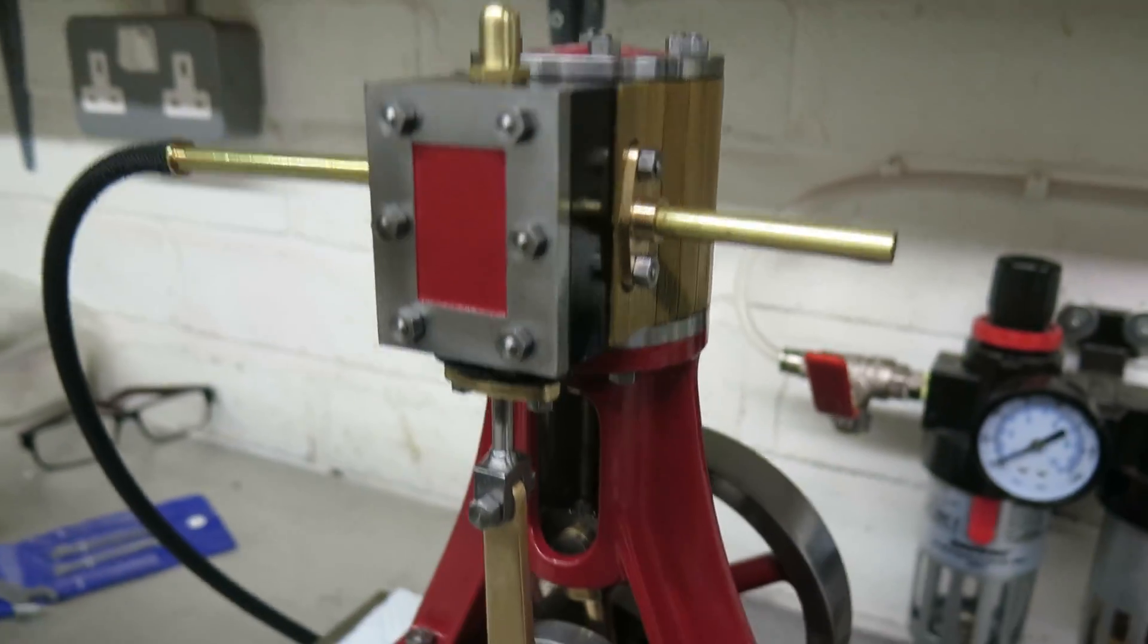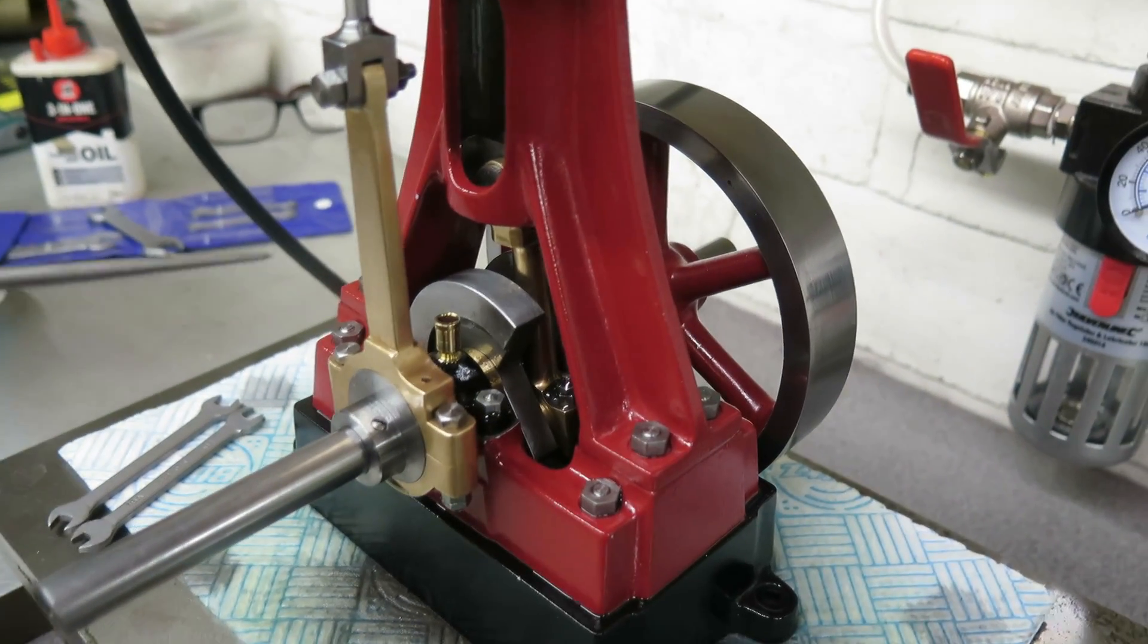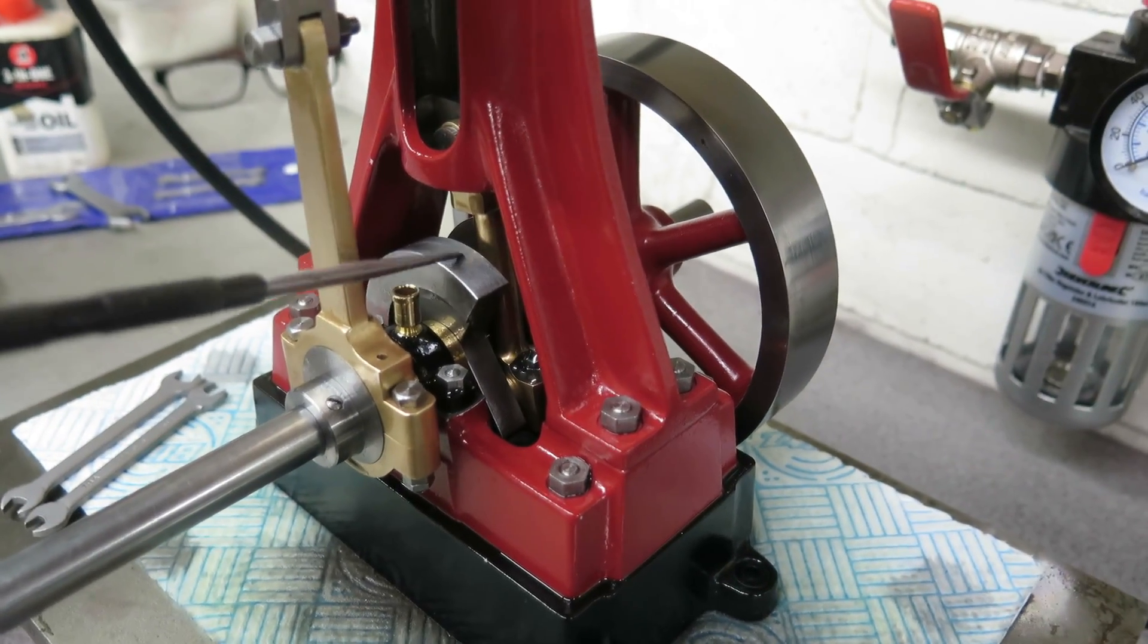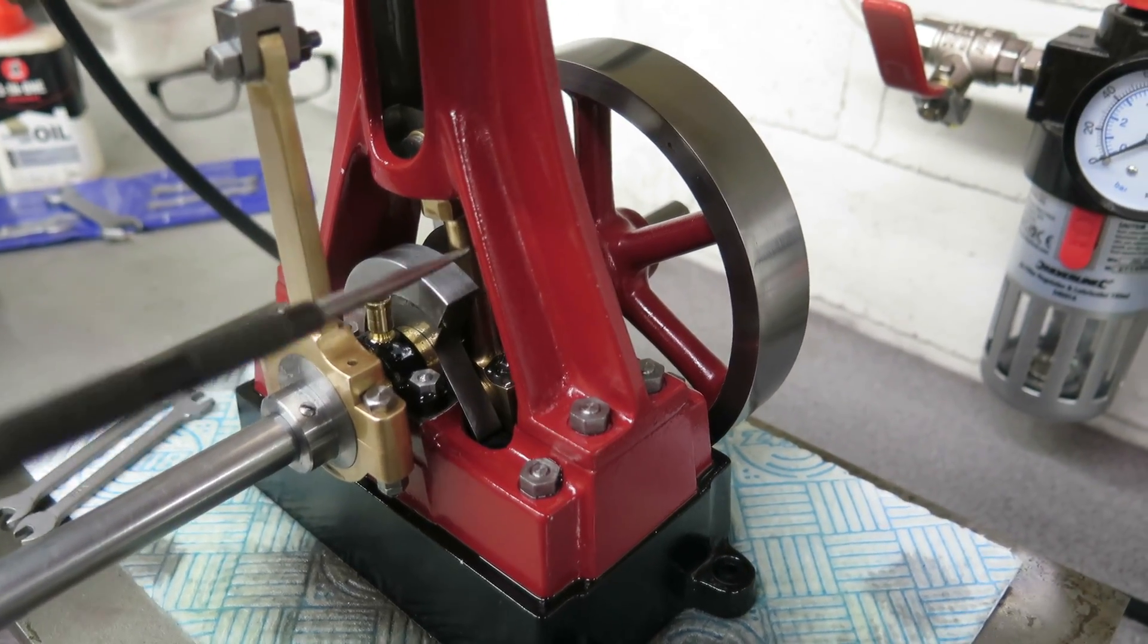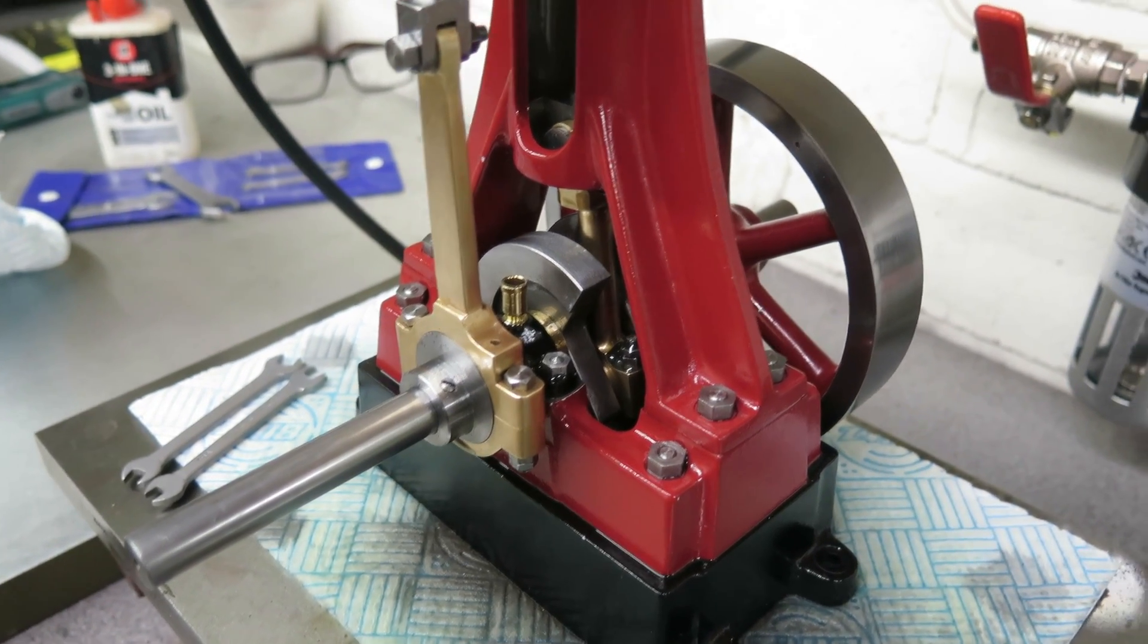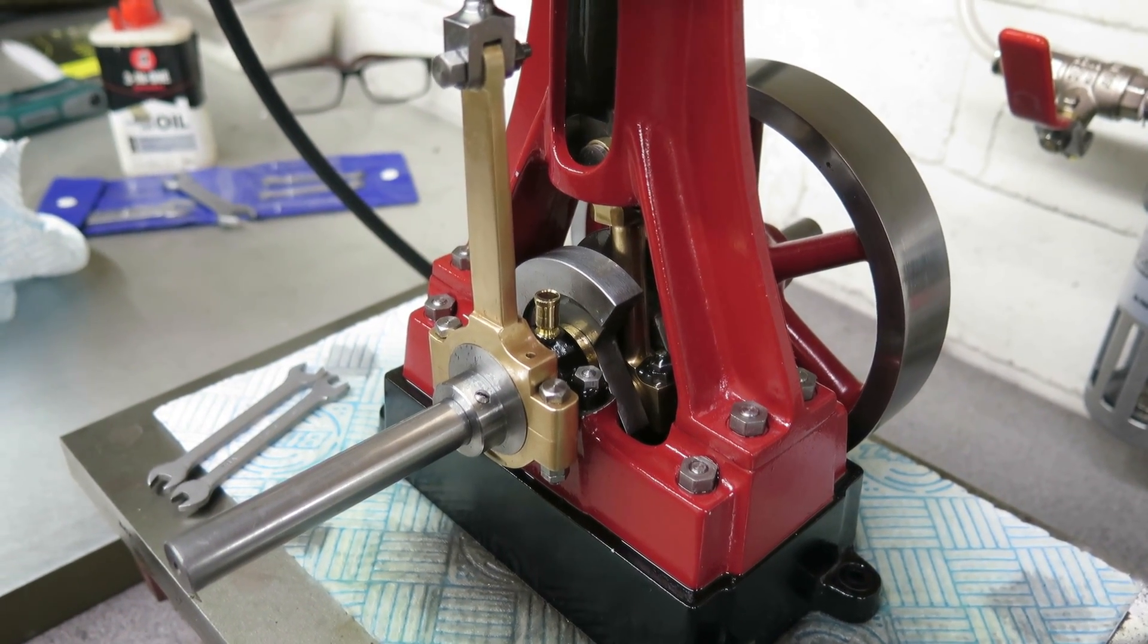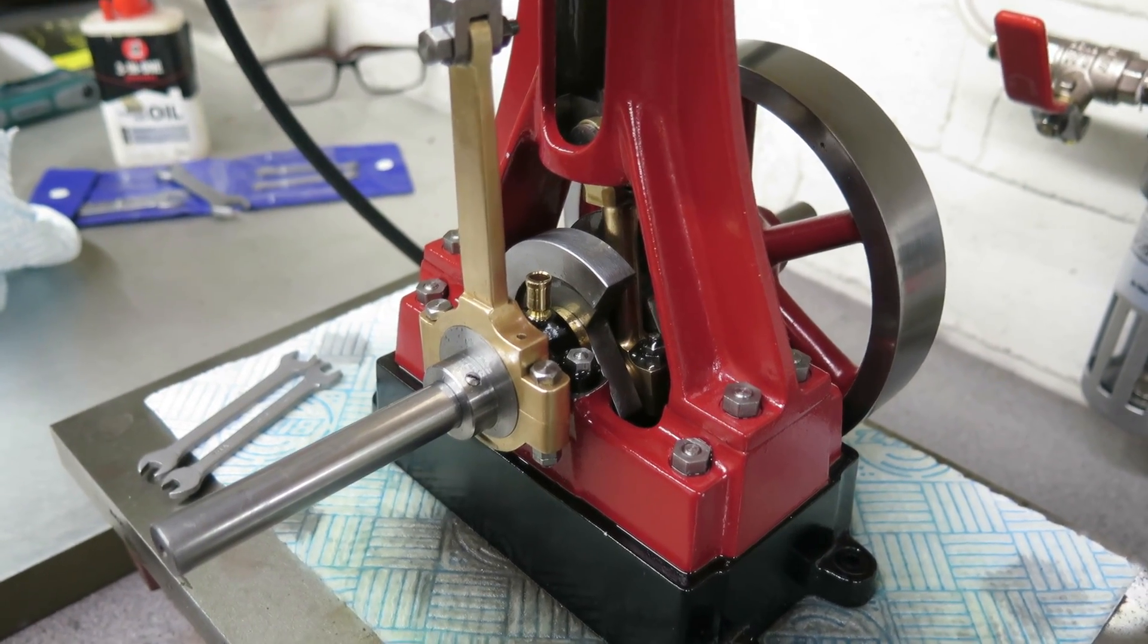Where I did alter it away from the drawing is I made a longer crankshaft, which I'll tell you about in a second. I also made the webs so that they had counterweights on them, counterbalanced, which seems to work quite well when I run it at a higher speed. I can't claim any credit for them being the right weight, it was just pure luck.